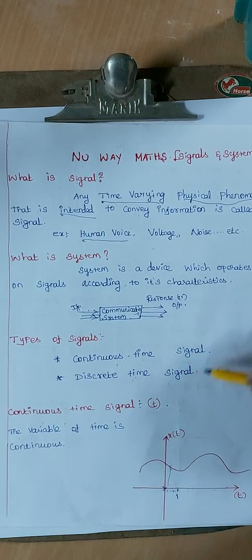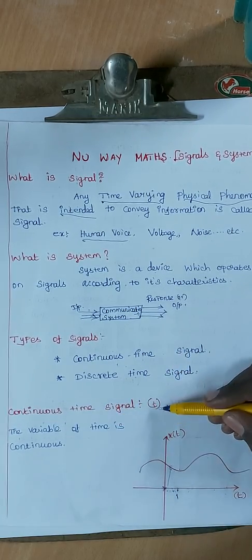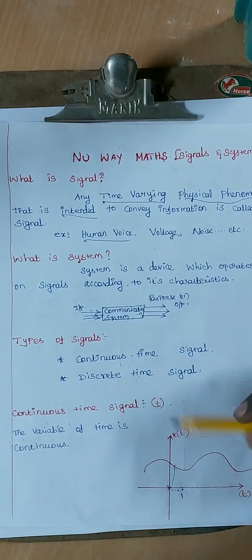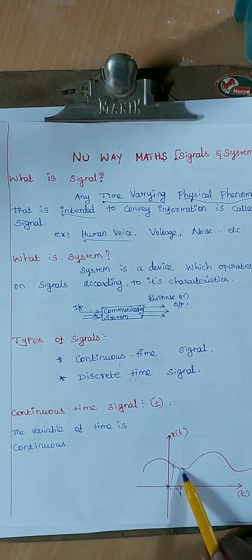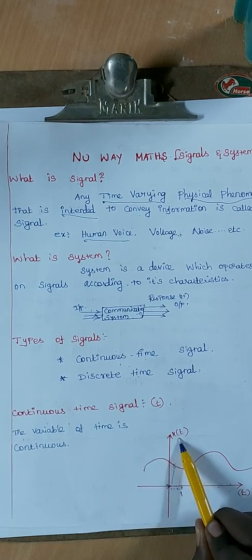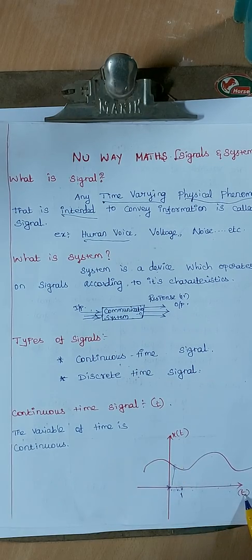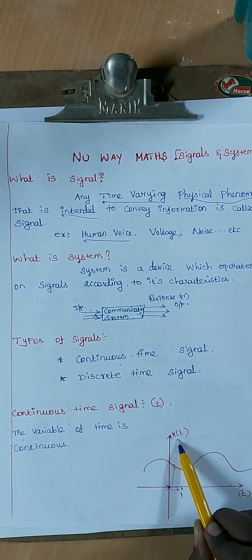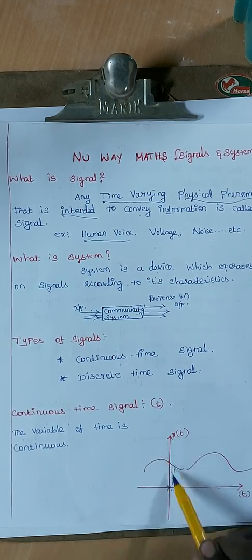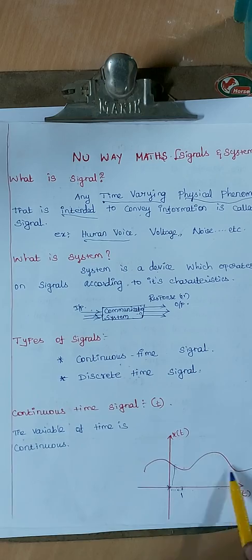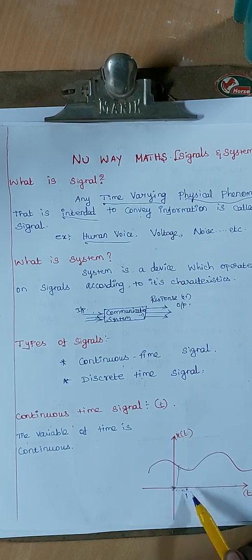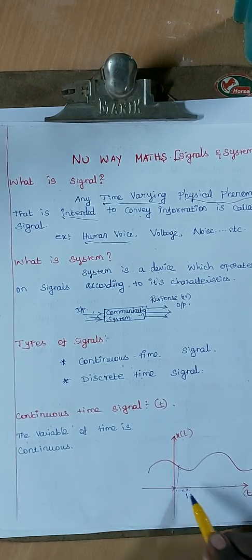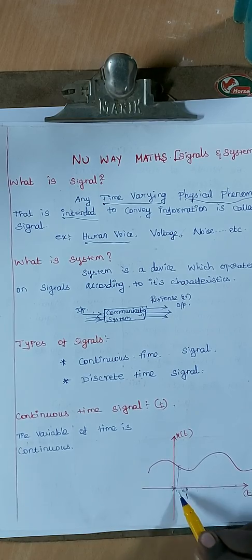Let's talk about Continuous Time signals, denoted as x(t) using round brackets. The variable of time is continuous. Looking at the graph, the x-axis is Time and the y-axis is Amplitude. When the variable of time is continuous, we call it a continuous time signal.